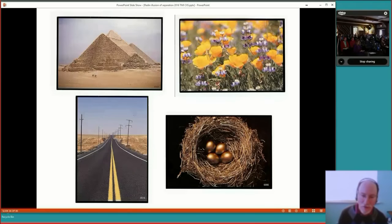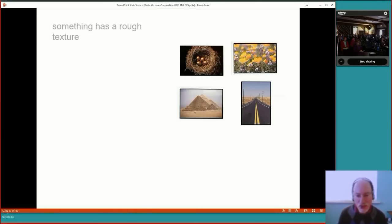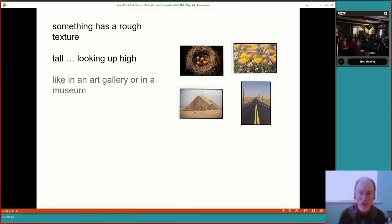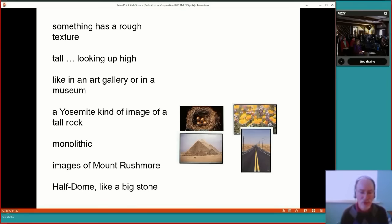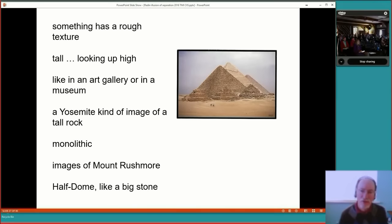So here's an actual session that we did. These are the four images selected at random to be as different from each other as possible. And then this is what Gail said while she's in the Gansfeld condition. She said something has a rough texture. It's tall. I'm looking up high, like in an art gallery or in a museum. A Yosemite kind of image of a tall rock. Monolithic. I say here that Gail said the word monolithic, but later said she wasn't quite sure what the word meant, but that it was somehow associated with this target. Images of Mount Rushmore and Half Dome, like a big stone. Half Dome is a big rock in Yosemite National Park. She then saw the four images. She selected one of them. You probably have a guess as to what the target was. And indeed the target was the pyramid. So this would have been considered a hit. She got the one in four targets correctly.